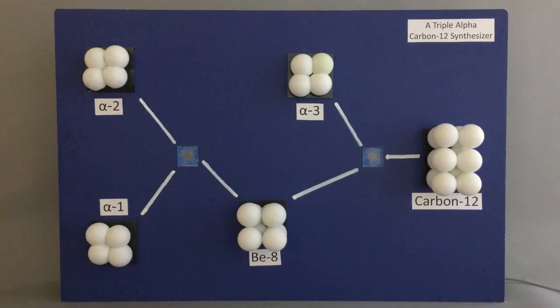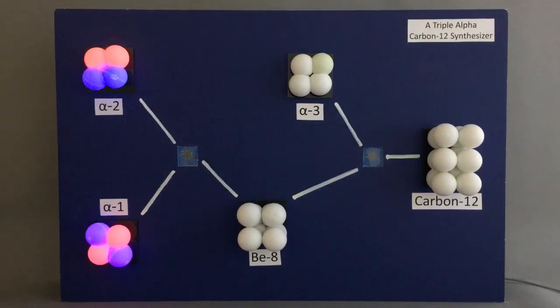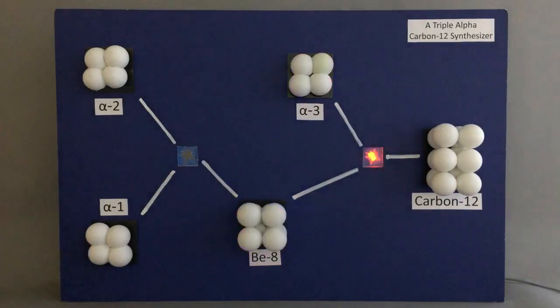Now that we have a better appreciation for the pieces of this drama, let's see the full sequence in action from left to right. Start with the two alpha particles. The two alpha particles collide. We see the collision. They form unstable beryllium. By chance, alpha-3 collides. A carbon nucleus is created. We get stable carbon.